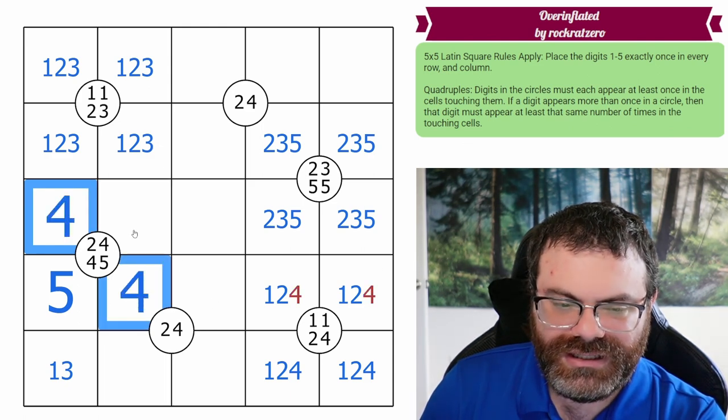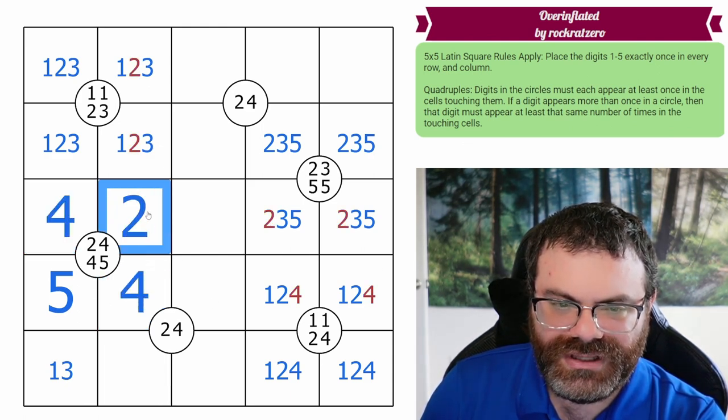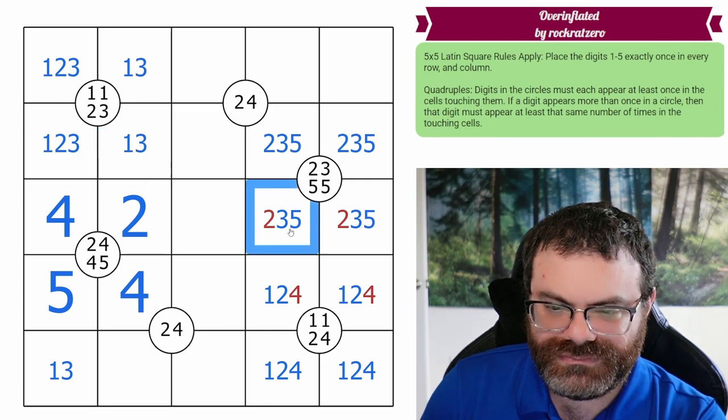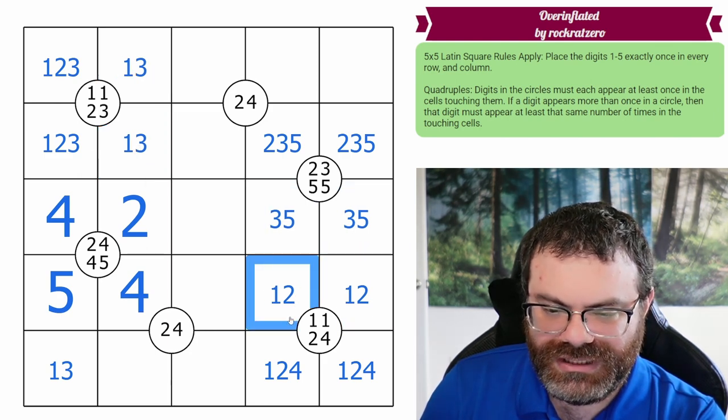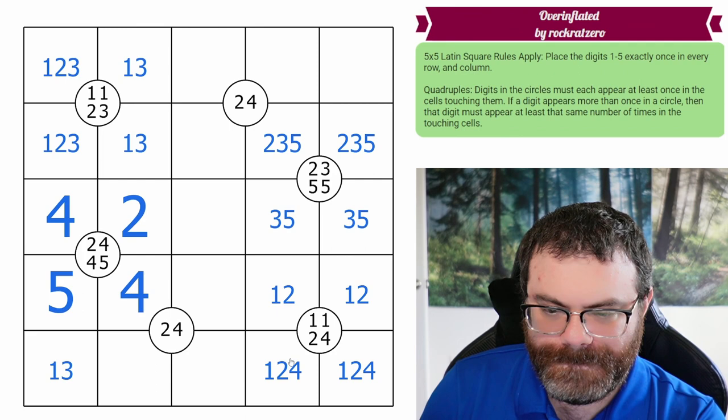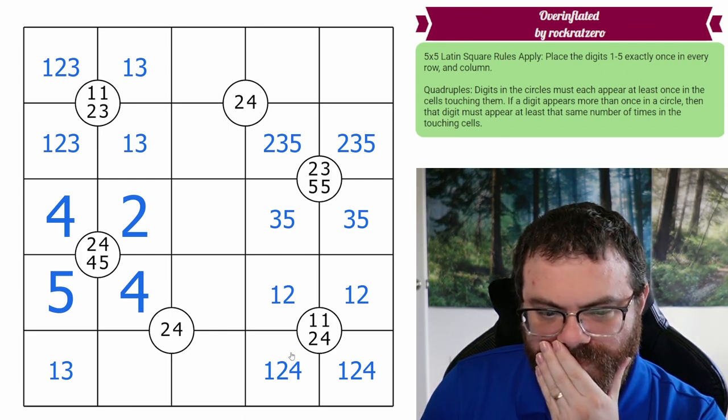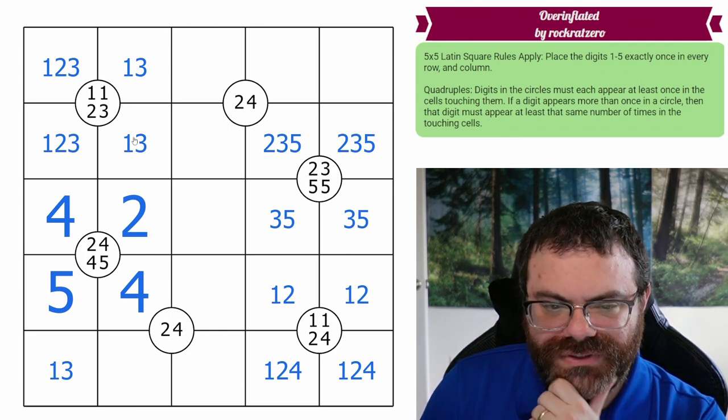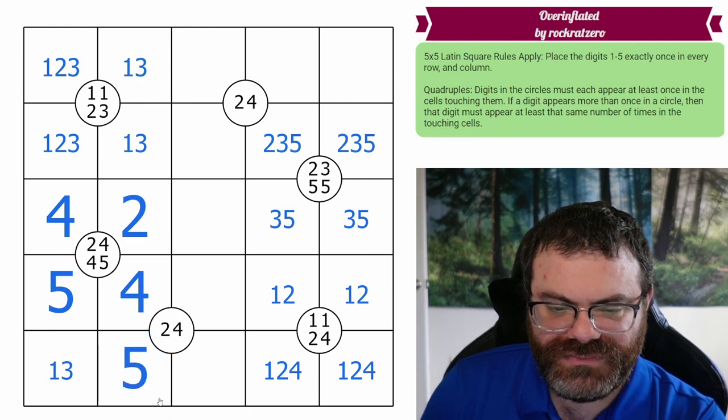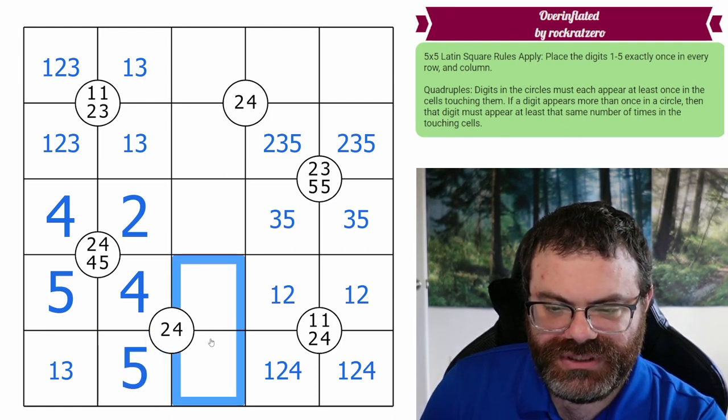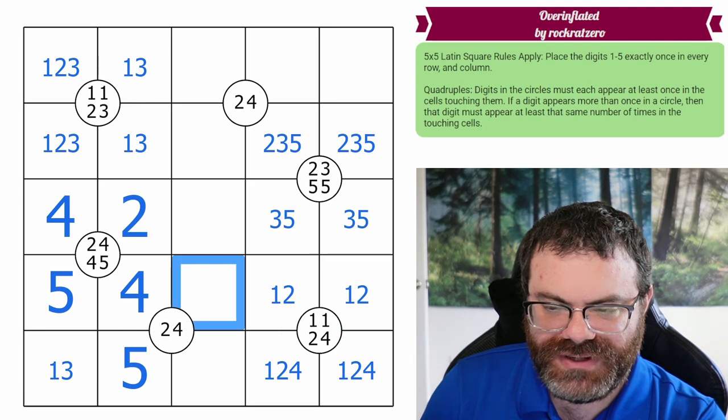This has to be the double 4 and this has to be the 2. Okay, clean all this up a little bit. Okay, what do we want to do here? This is going to be the 5 for the column. We are going to need a 2 in here and it can't be here because of the 1, 2 pair. In fact, this is a 3.